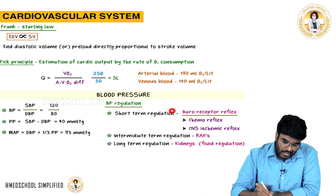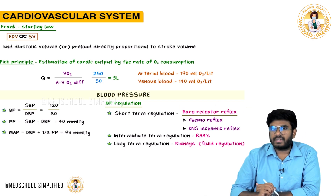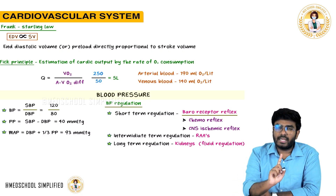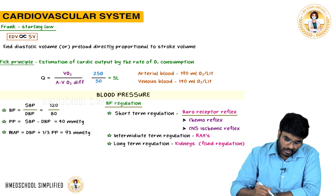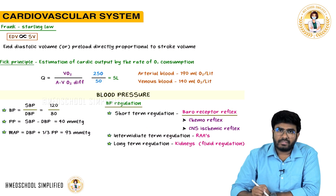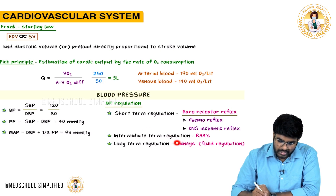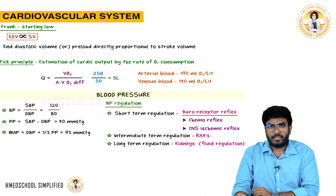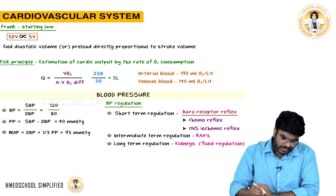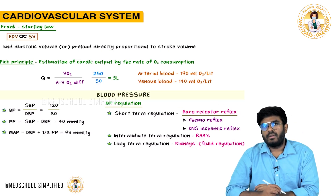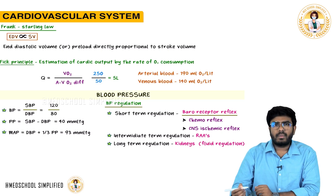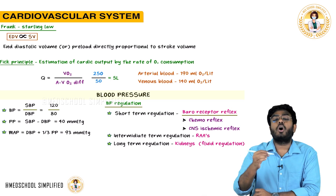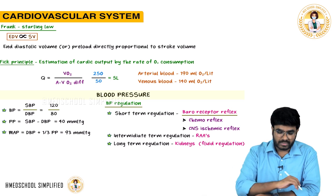Short-term regulation includes the baroreceptor reflex. Baroreceptors are receptors for blood pressure, monitoring it at all times. Intermediate-term regulation includes the RAS pathway — the renin-angiotensin-aldosterone system — and long-term regulation is done by the kidneys via fluid regulation.